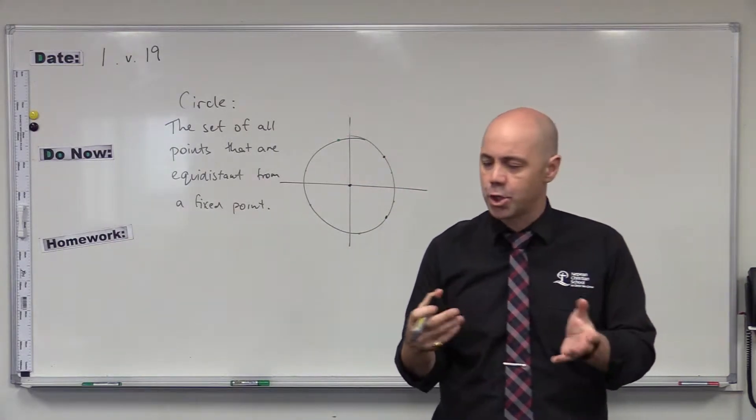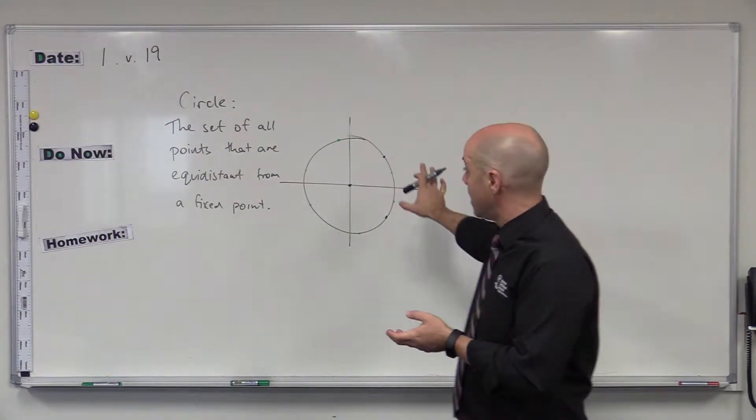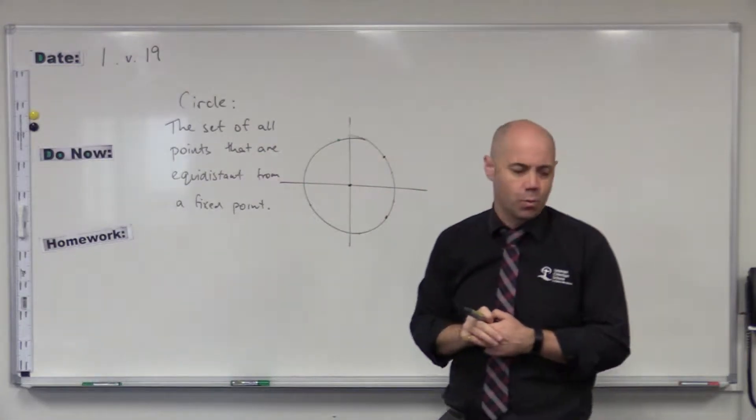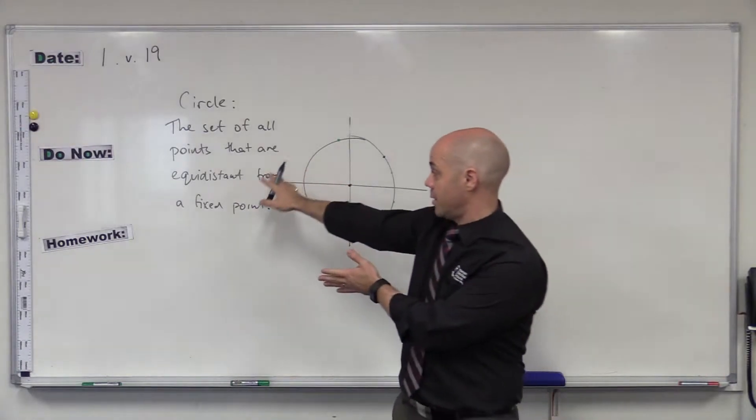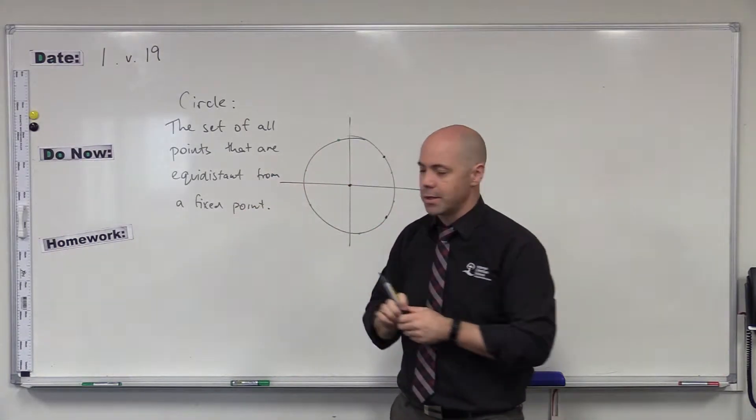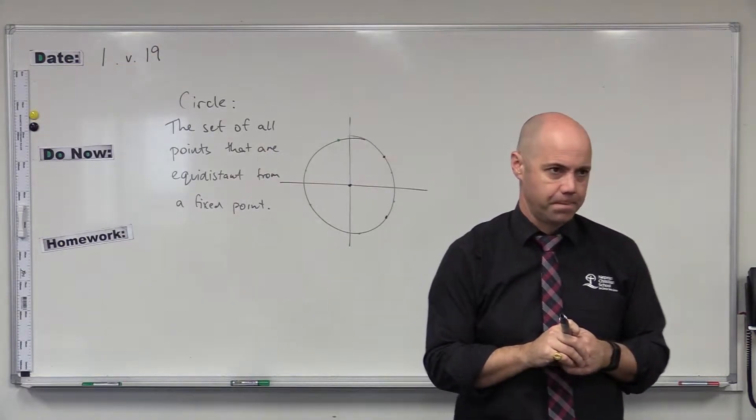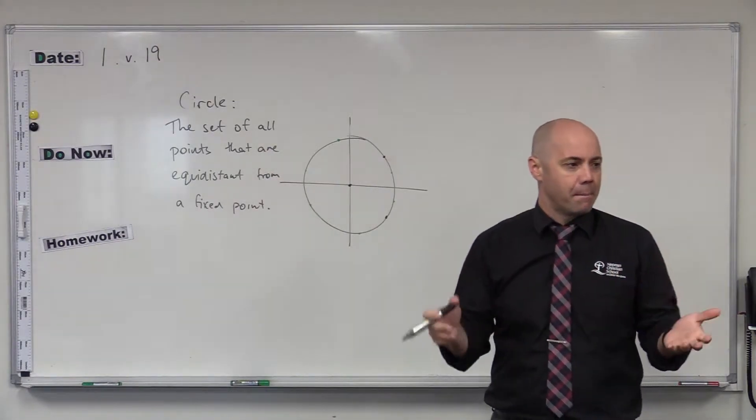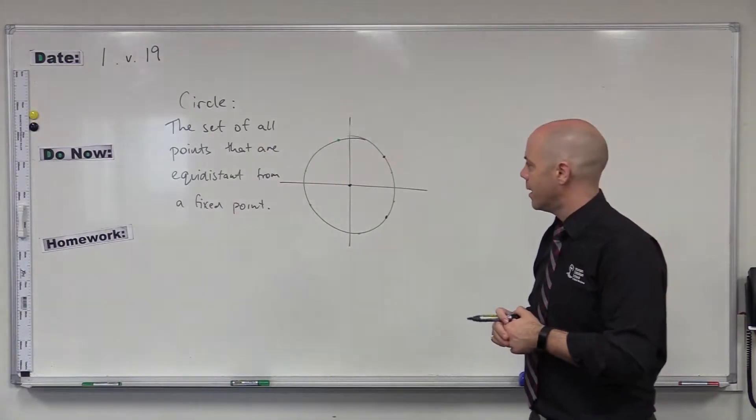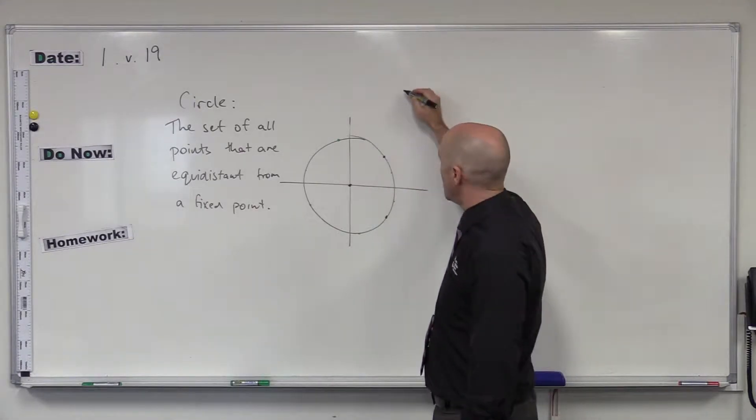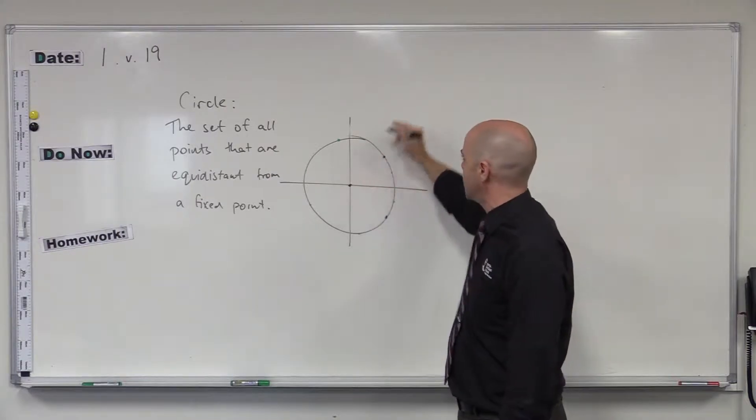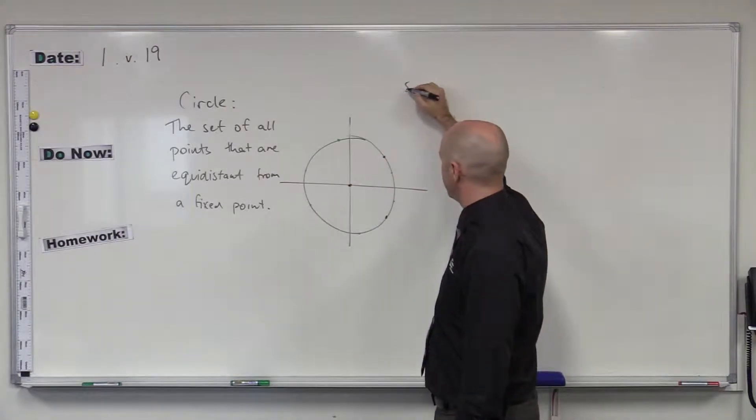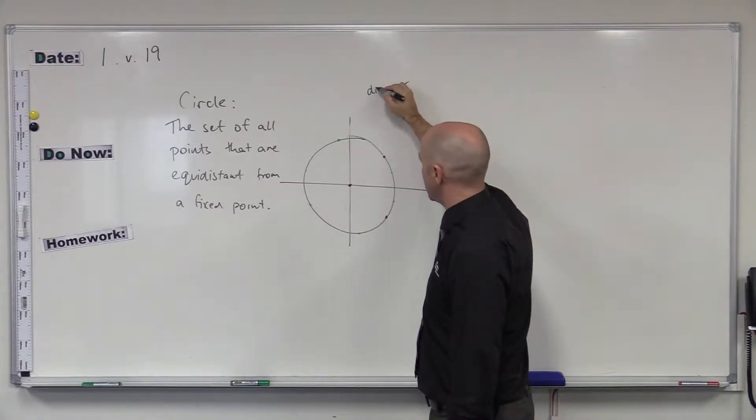So we're going to come up with an equation to describe that in the Cartesian plane using x's and y's. We're going to use that definition, the set of all points that are equidistant from a fixed point. Let's put some numbers to it. Let's say we've actually got a circle. We're going to have the distance from all the points of the circle to the centre as 5. So the distance is going to be 5.